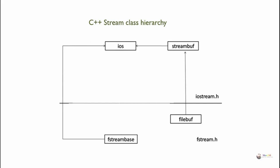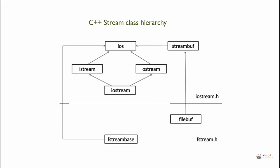In stream classes, to perform input and output operations, there are classes istream and ostream. istream is for input stream and ostream is for output stream; both are derived from iostream.h. To perform combined input and output stream operations, there is iostream, which is derived from both istream and ostream.